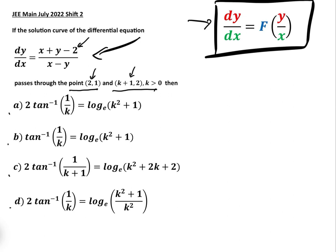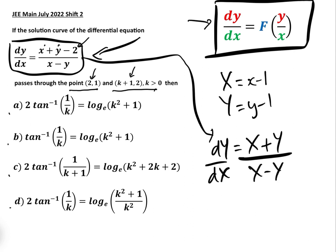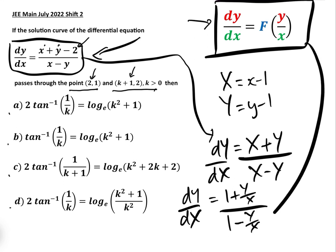The first thing we want to do is use the substitution X = x − 1 and Y = y − 1. That gives us dy/dx equals (x + y − 2) over (x − y − 1 − 1), which is the same as (X + Y) over (X − Y). Dividing top and bottom by X gives us (1 + Y/X) over (1 − Y/X), which is in the correct homogeneous form, and so now we can begin to solve.